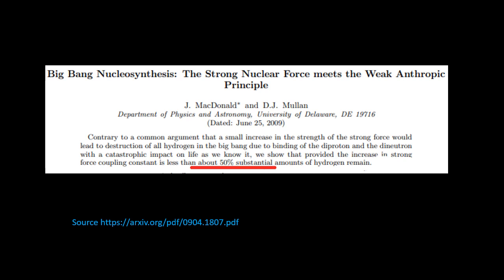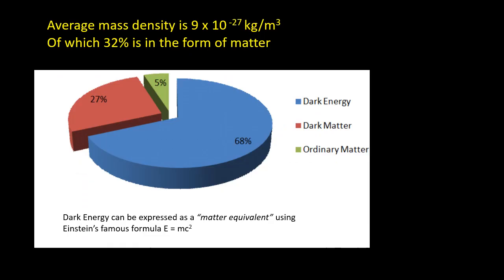More recent work has questioned whether such a small increase in the strength of the nuclear force would be sufficient to convert all the hydrogen into helium-2. A paper in 2009 suggested that a 50% increase in the relative strength of the nuclear force would be needed. Even so, whether it's 13% or 50%, it remains the case that a relatively modest increase in the relative strength of the nuclear force would mean that our universe could not support life.